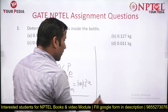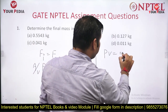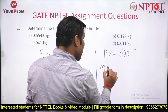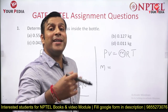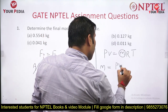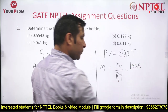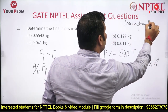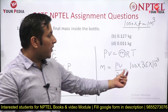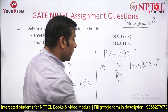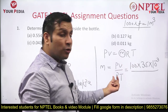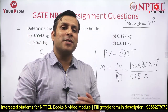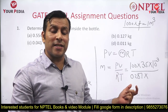Air can be treated as an ideal gas, so apply the ideal gas equation PV = mRT. We want to find the final mass. Mass = PV/RT, where P = 100 kPa, V = 35 liters = 35×10⁻³ m³, R = 0.287 kJ/(kg·K) for air. The final temperature equals atmospheric temperature: 22°C, which is 273 + 22 = 295 K.